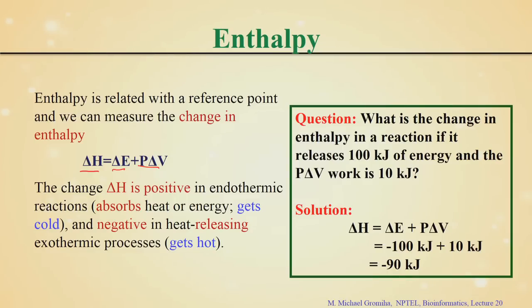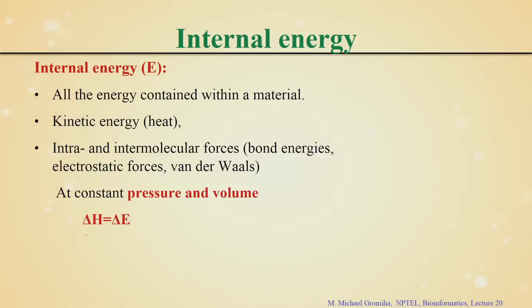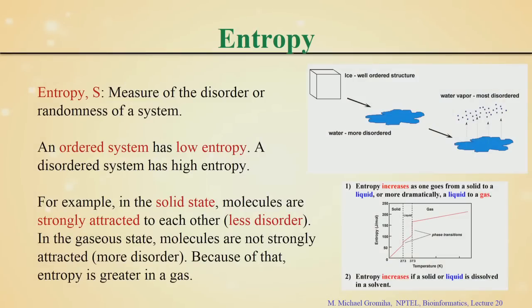Internal energy represents all the energy contained in the material — kinetic energy or intramolecular interactions like bond energy, electrostatic energy, van der Waals force and so on. At constant pressure and volume, delta V equals zero, so delta H equals delta E, the internal energy of the system. You can represent delta H as the internal energy of the system — that means the different types of interactions.